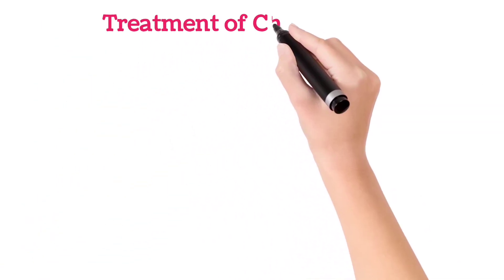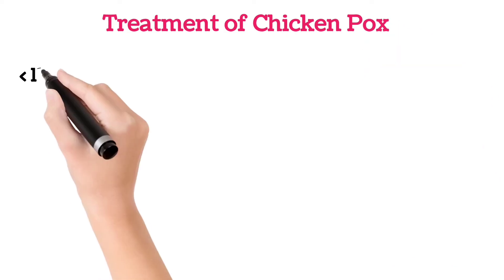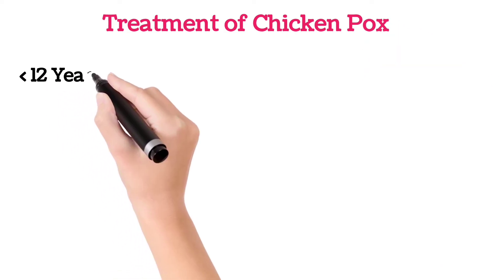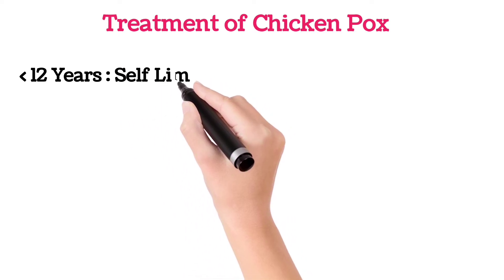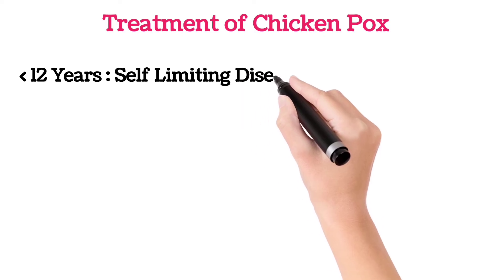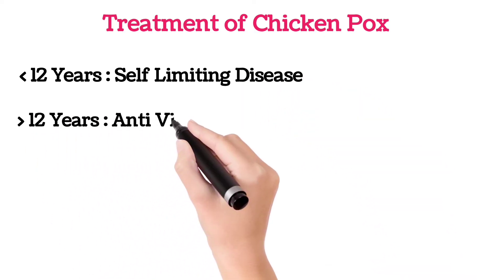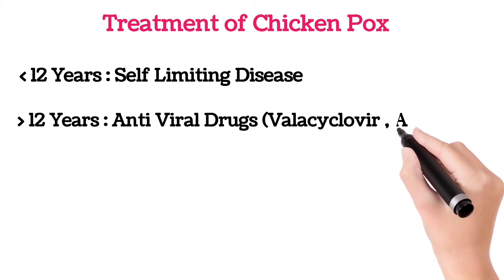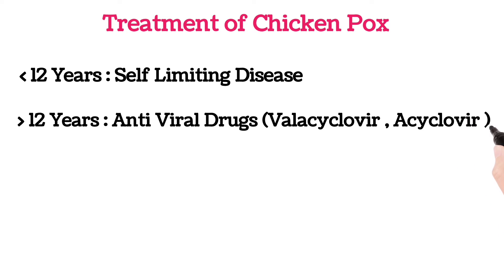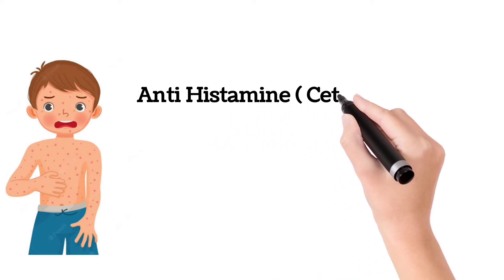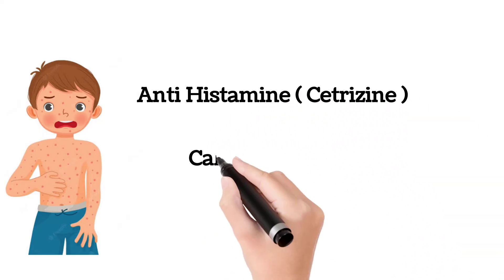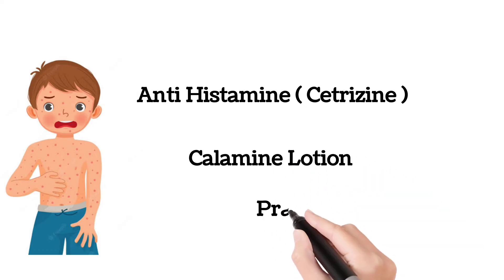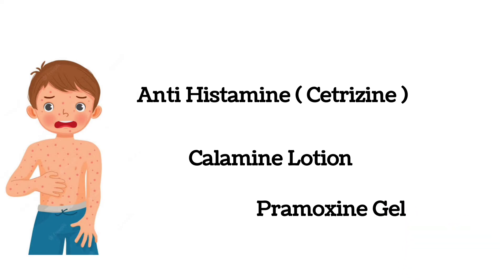For treatment, in children less than 12 years of age, chickenpox is a self-limiting disease and resolves on its own. But for those greater than 12 years, we should advise antiviral drugs like valacyclovir and acyclovir. For symptomatic relief, cetirizine, which is an antihistamine, calamine lotion, and pramoxine gel give relief from the itching sensation.